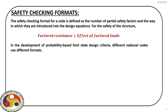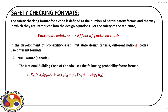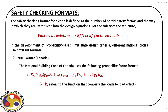For example, we have the NBC format. In this format, the design guideline is given as follows: on the left hand side we have the factored resistance — in this case γᵣ is the resistance factor multiplied with the nominal resistance Rₙ — and that should be greater than the complete load effect given on the right hand side. This Ks refers to the function that converts the loads to load effect, so we start with the loads and find out what will be the impact on the structure when those loads are applied.